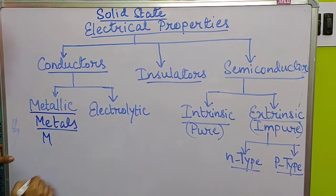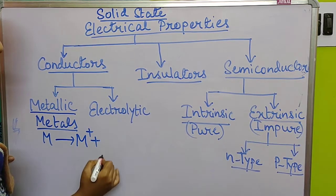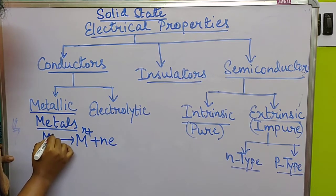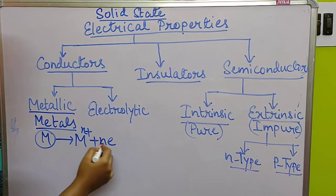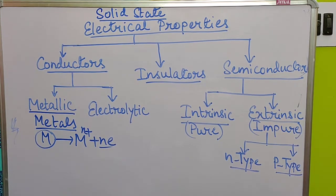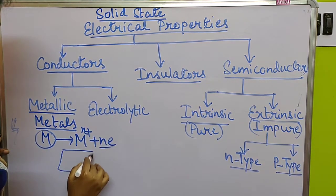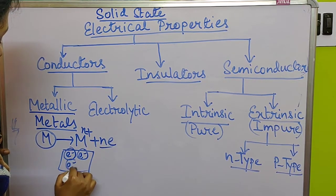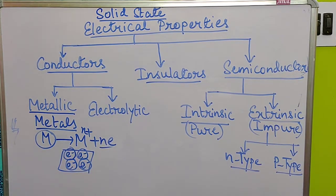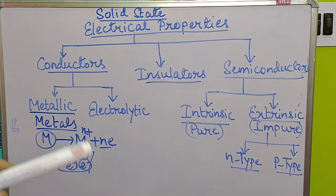In case of metallic conductors, these are normally different types of metals which have free electrons in them. A metal M can eject one or more electrons from it, making a cation, and the electrons can then easily move through the surface of the metal. These free electrons can conduct electricity by moving from one place to another place.